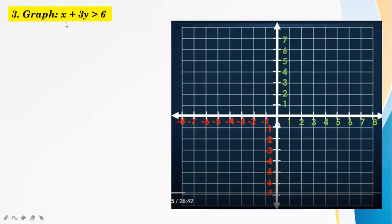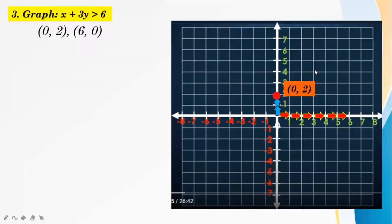Graph x plus 3y greater than 6 using the two points. The first point is (0, 2) — 2 units above the x-axis. The second point is (6, 0) — 6 units to the right of the y-axis.